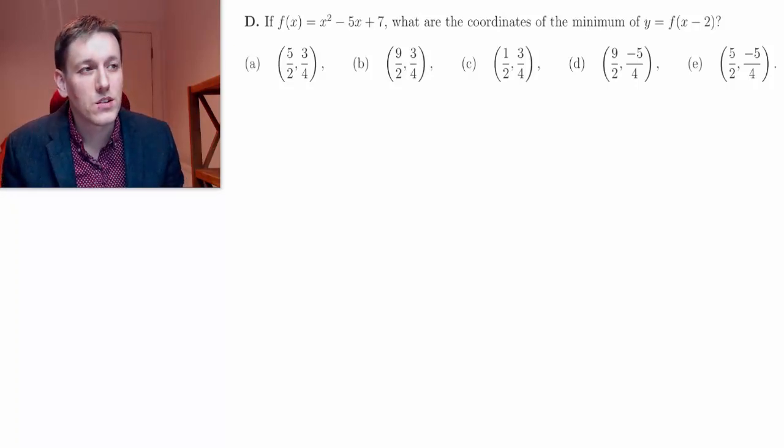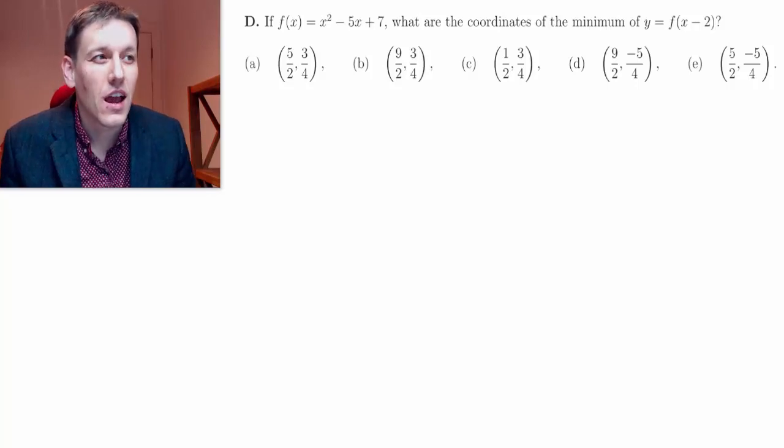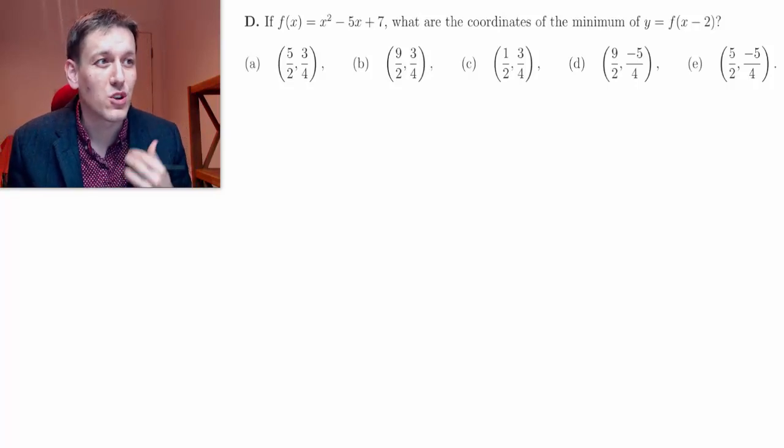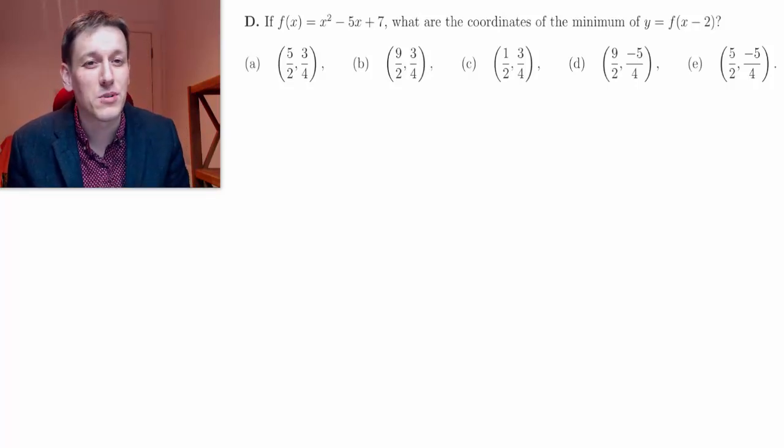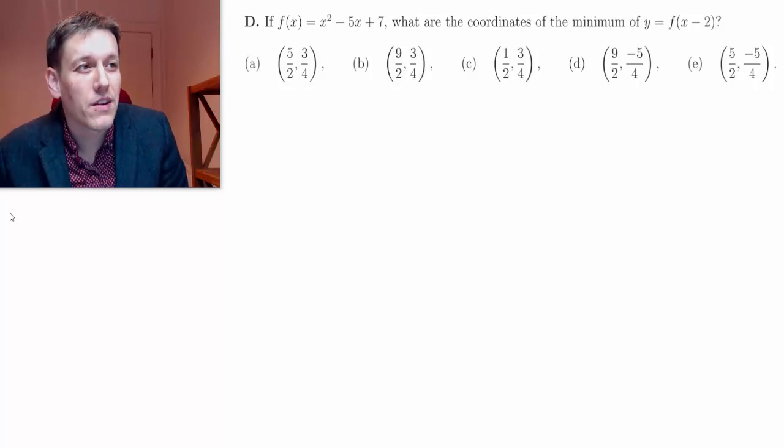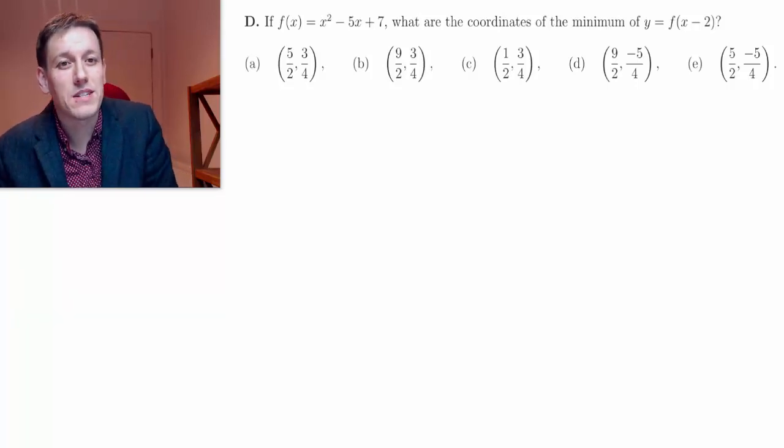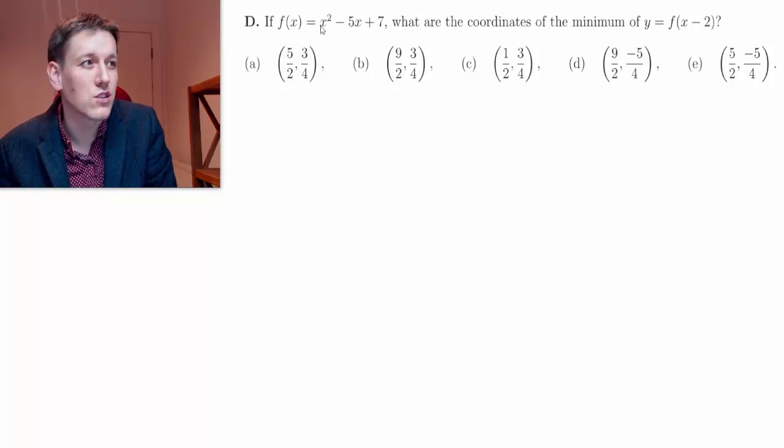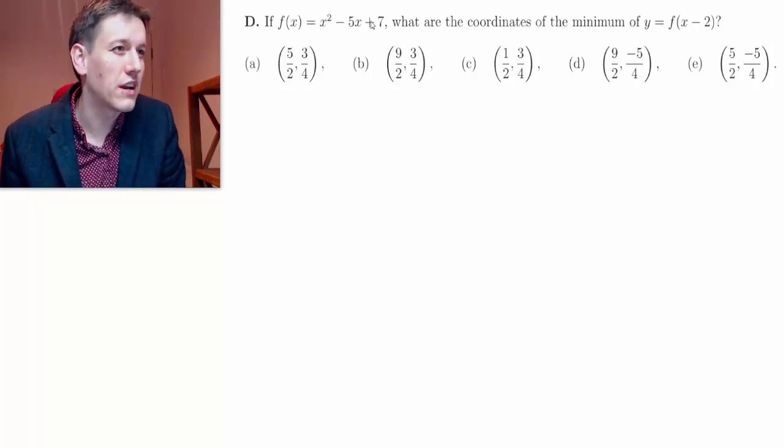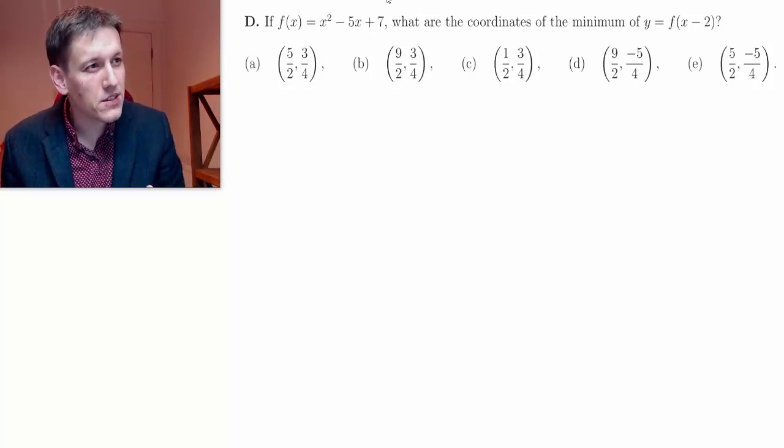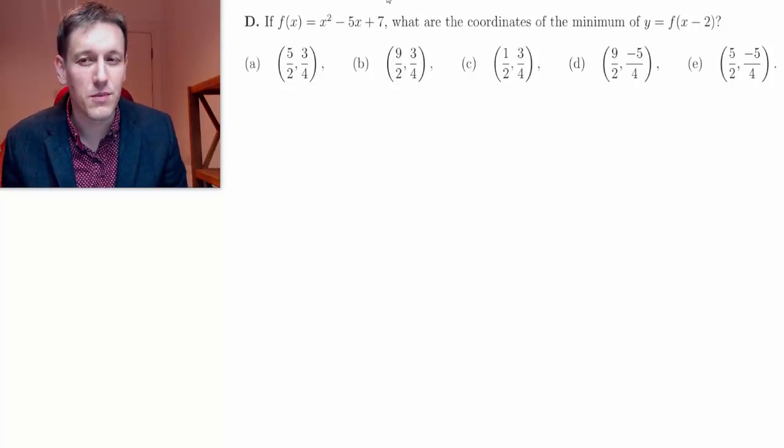Now, two ways of going about this, I think, and either would be fine, but you want to make sure you're using time as best as possible in this exam. So perhaps the most direct way, but the less fast way, might be to substitute x minus 2 in place of x in your original quadratic here, get x minus 2 squared minus 5 times x minus 2 plus 7, multiply it all out, work out where its minimum is. But we really want to make use of the maths that we know to do this quickly.